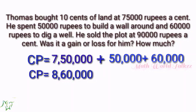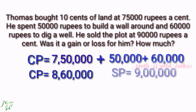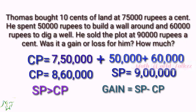What is the selling price here? He sold the plot at Rs. 90,000 per cent. So SP is equal to 90,000 multiplied by 10, that is Rs. 9,00,000. Now we find that SP is greater than CP. Hence, there was a gain for Thomas. Gain is equal to SP minus CP, that is Rs. 9,00,000 minus Rs. 8,60,000, which equals Rs. 40,000.